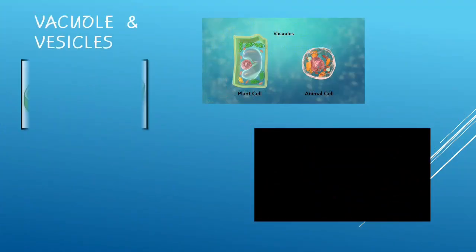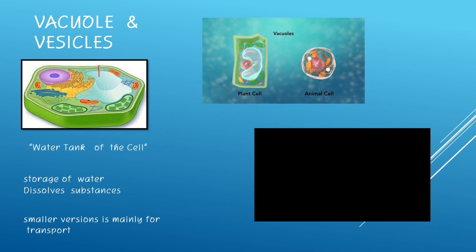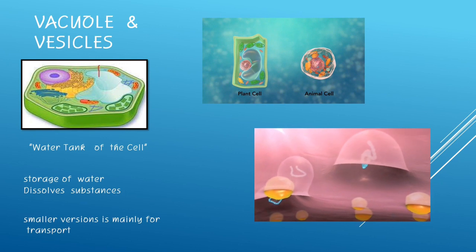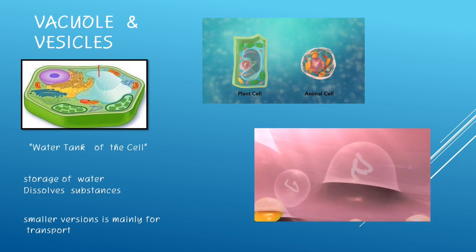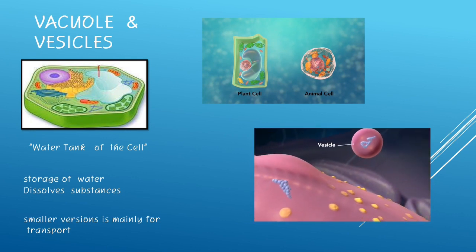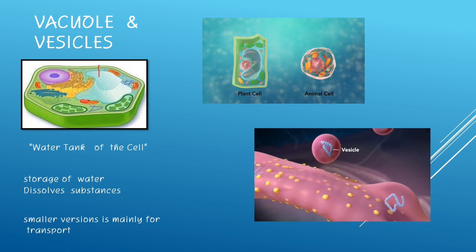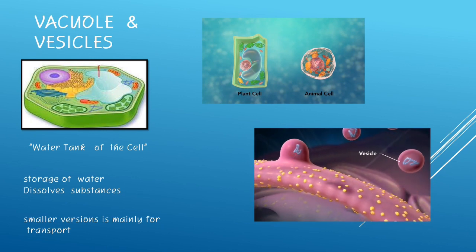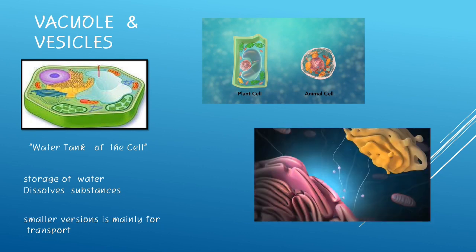Vacuoles and vesicles. Vacuoles are large water-filled sacs floating in the cytoplasm. It stores food and other materials by and within the cell. All plants have very large vacuoles. Vacuoles are the water tank of the cell. It carries proteins and other materials to Golgi bodies. It serves as a storage of water that dissolves the substances. The smaller version is mainly for transport.